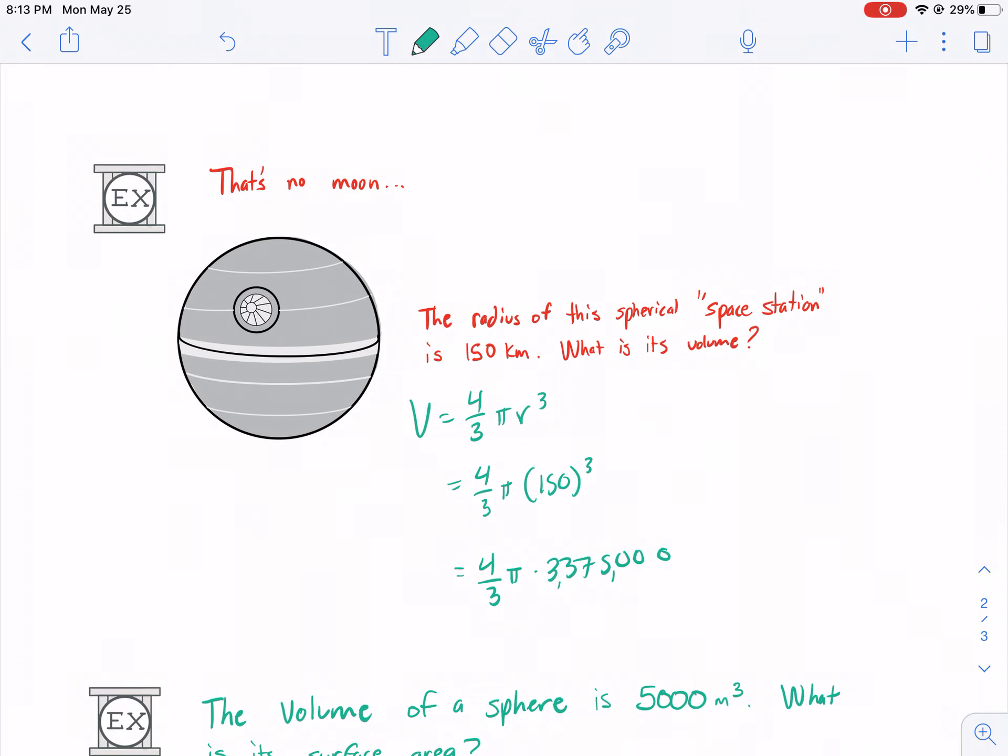And we're going to multiply this by four, divide this by three. And we get 4,500,000, 4.5 million pi kilometers cubed. Pi kilometers cubed.